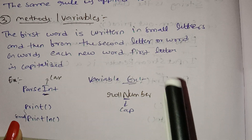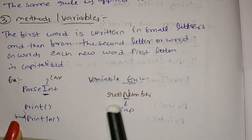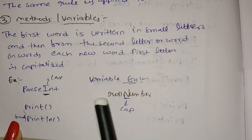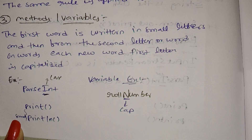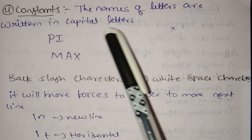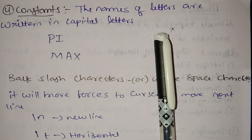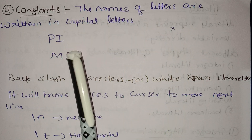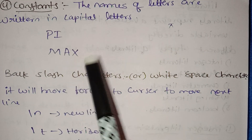Variables follow the same rule: for example, roleNumber — 'role' is a small letter, the second word 'Number' starts with a capital letter. Next, Constants: the names of constants are written entirely in capital letters — for example, PI_MAX.